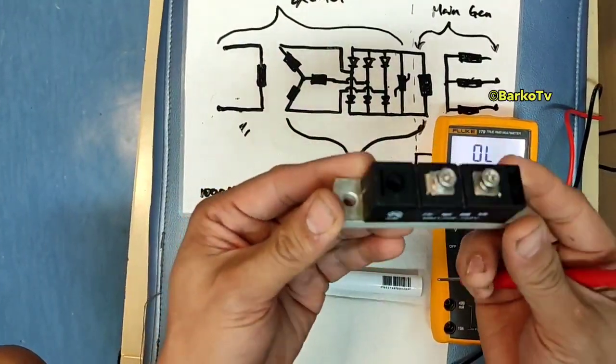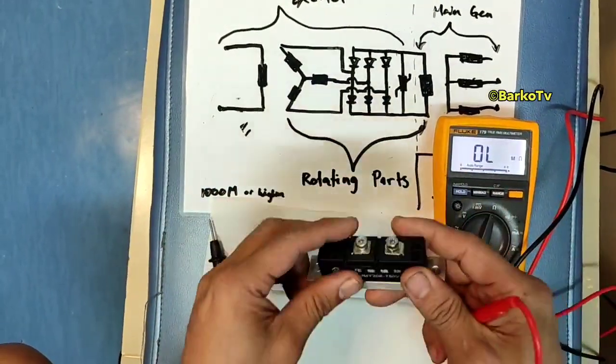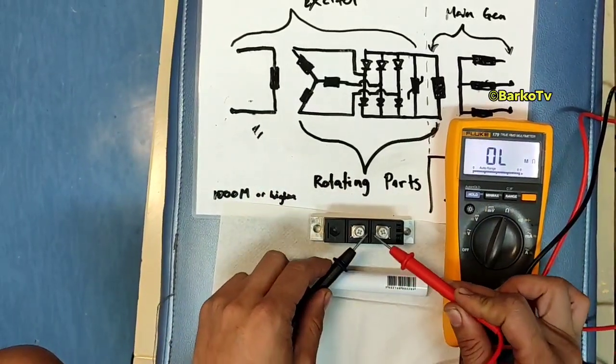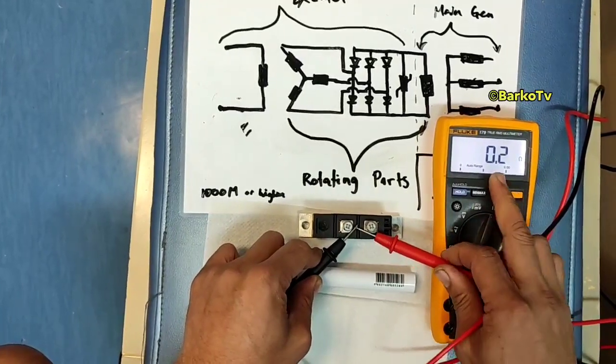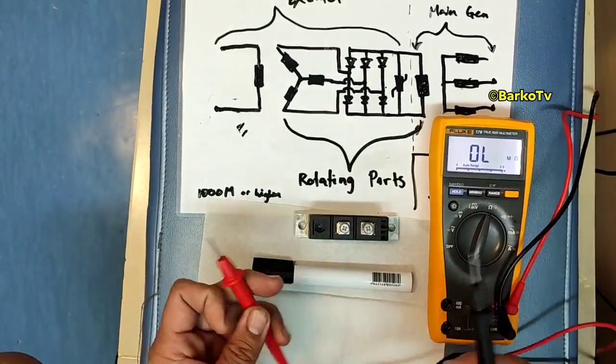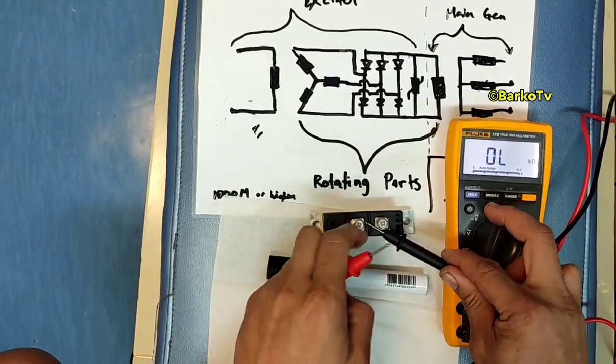How to determine if this varistor is bad. If the varistor is bad, it's like short circuit. The reading is like this. Both sides also. It's like short circuit.